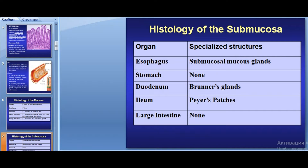Regarding the next layer differences — the submucosa. The submucosa in different parts of the digestive tube can contain specialized structures such as glands and aggregations of lymphoid tissue. For example, in the esophagus submucosa we find submucosal mucous glands; in the duodenum, Brunner's glands; in the ileum, Peyer's patches with aggregation of lymphoid tissue.